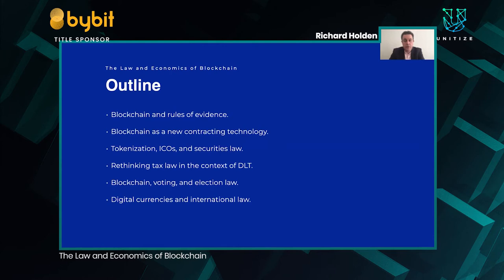The penultimate topic is voting and election law — thinking not only about mobile voting and utilising blockchain technology, but also some of the broader areas around security and election law. Obviously, in the United States, with a very consequential election coming up and in the context of COVID-19, voting with one's physical presence involved is dangerous and potentially impossible in a lot of circumstances — that's gained increased interest for obvious reasons. And the last one is thinking about digital currencies and how regulatory agencies around the world are grappling with their potential impact.